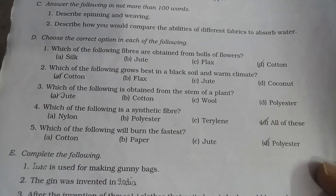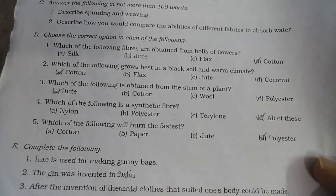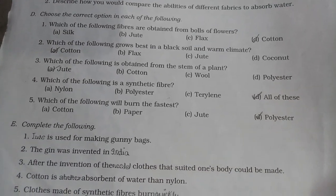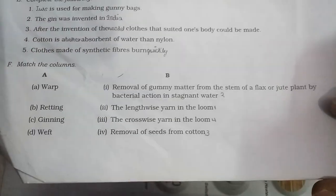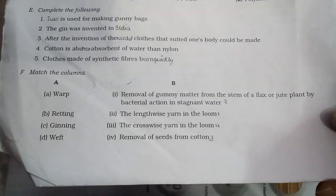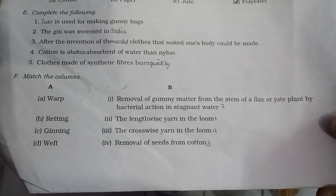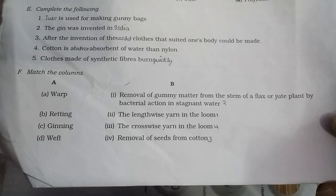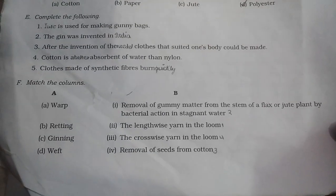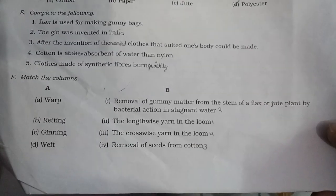Which of the following is a synthetic fibre? Nylon, polyester, terylene — all of these. Which of the following will not wrinkle fastest? Polyester. The lengthwise yarn in the loom is the warp. Removal of gummy matter from the stem of flax is called retting. Removal of seeds from cotton bolls is called ginning. The crosswise yarn in the loom is the weft.